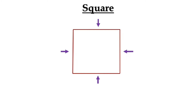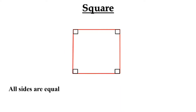What is a square? A quadrilateral having all four sides equal and each angle is 90 degrees. So, a square is a quadrilateral which has all sides equal and each angle is 90 degrees.